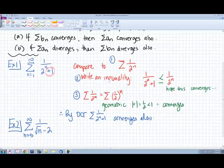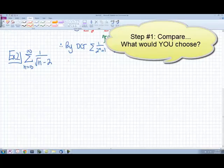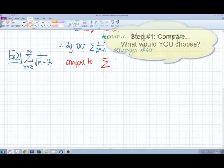All right, let's try another one. Now this time our series starts at 5. 1 over square root of n minus 2 from n equals 5 to infinity. So the first thing we're going to do is we're going to choose something to compare it to. I'm going to choose to compare it to a simpler version of what we see, which would be 1 over square root of n.